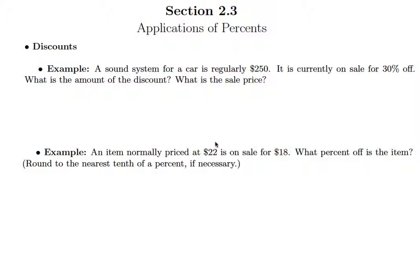So they ask two questions here, but let's focus on the first one. What is the amount of the discount? Because 250 is what the sound system regularly sells for, you can think of that as the original price. And we know that original is the base when we're thinking about our percent equation: amount equals percent times base.